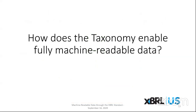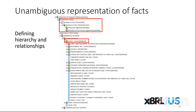Now we're moving on to how the taxonomy enables fully machine-readable data. In addition to containing concepts to be reported, the taxonomy provides information about how concepts relate to each other. That is structured as a presentation so you can see the hierarchy of terms. For example, a section in the US GAAP taxonomy shows the line items that fall underneath current assets. The taxonomy also contains what are called table structures — dimensional structures — that allow flexibility in how data is reported and reduce the number of concepts needed in the taxonomy, since they can be broken down in different ways.